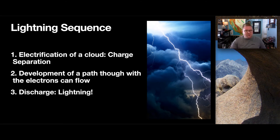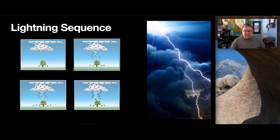So, moving forward, there is an actual sequence observed. The first sequence is the electrification of a cloud and charge separation. The cloud itself is going to hold a charge within those molecules. You'll have negatively and positively charged molecules. But now that the cloud is charged, the next step will be the development of a path through which the electrons can flow. And then the last one is the discharge, the end result, when we actually get to see the lightning. So, let's talk about each one of these sequences a little bit more.